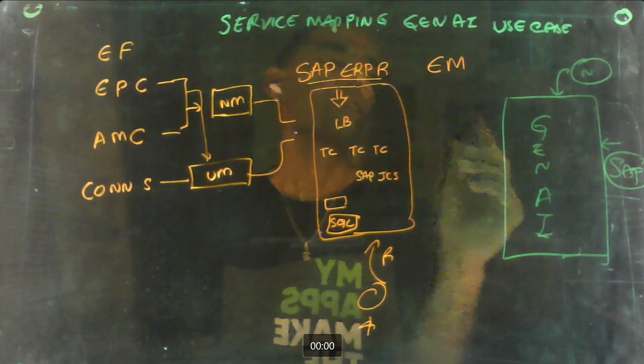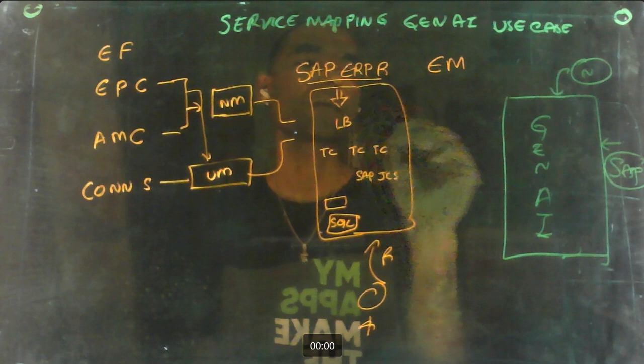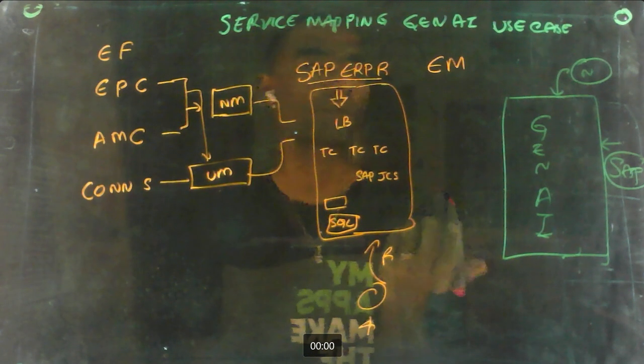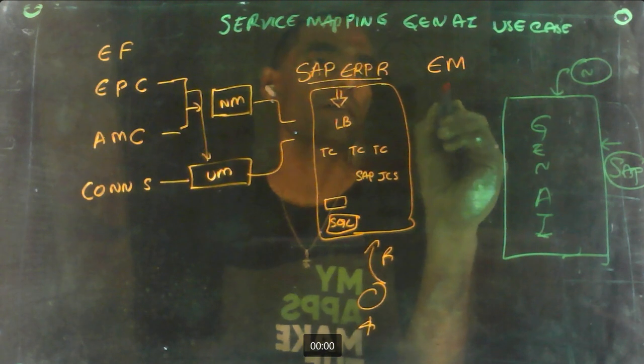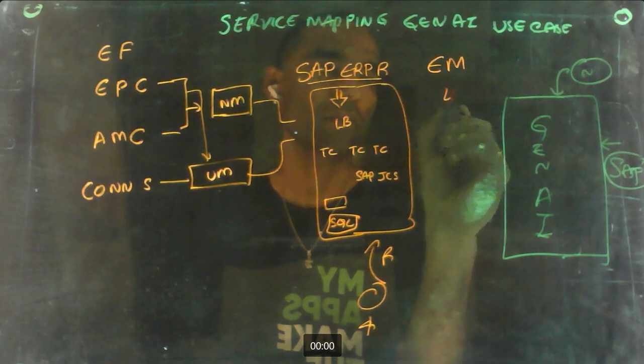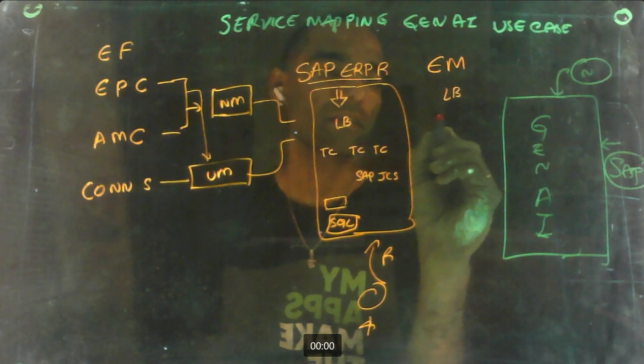So let's say they have the same construct and there will be a load balancer and then there will be Tomcat applications.